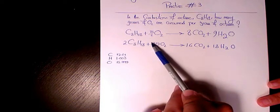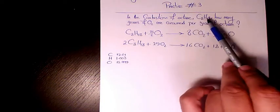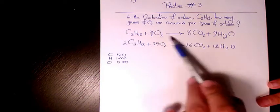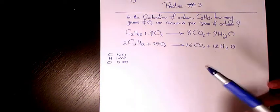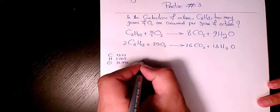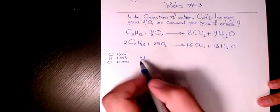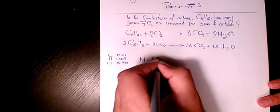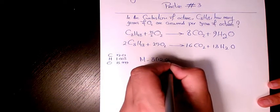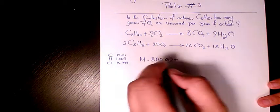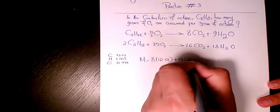The question is asking how many grams of oxygen we need per gram of octane. So first, I need to find the molar mass of octane, which is 8 times 12.01 (atomic mass of carbon) plus 18 times 1.008.